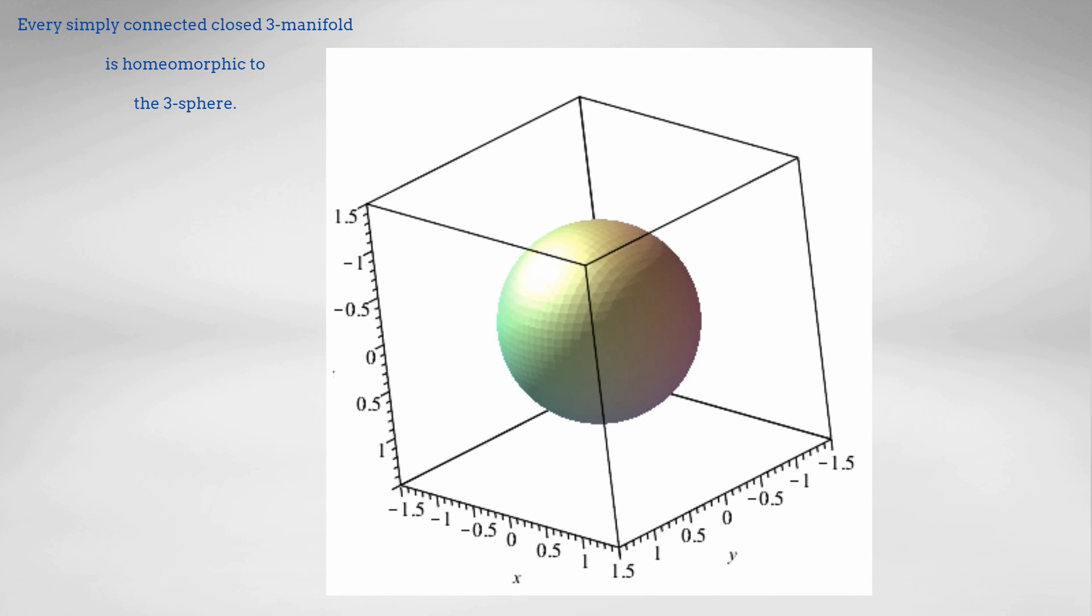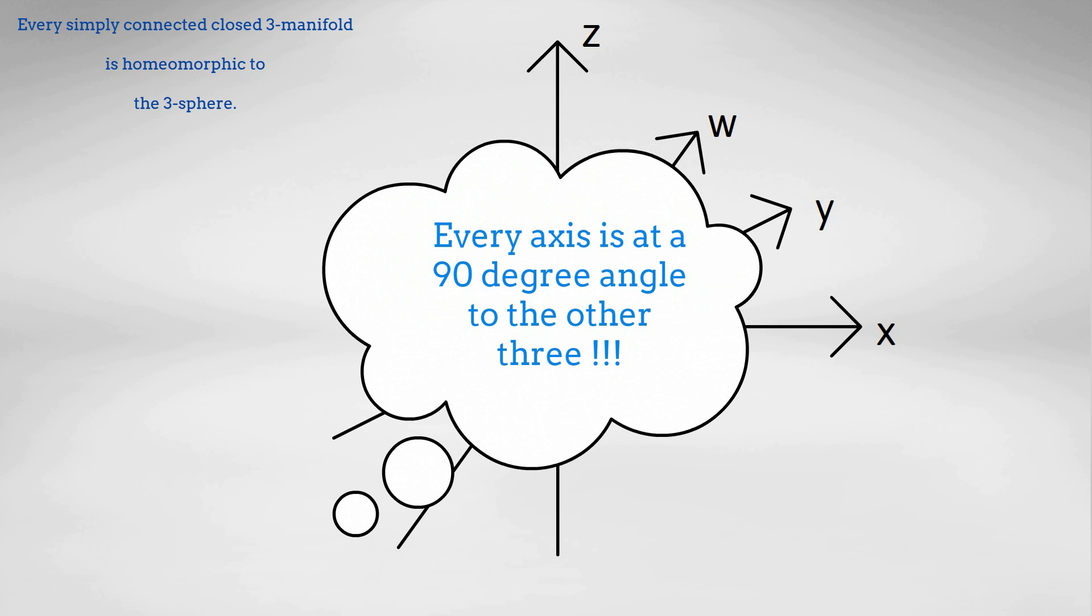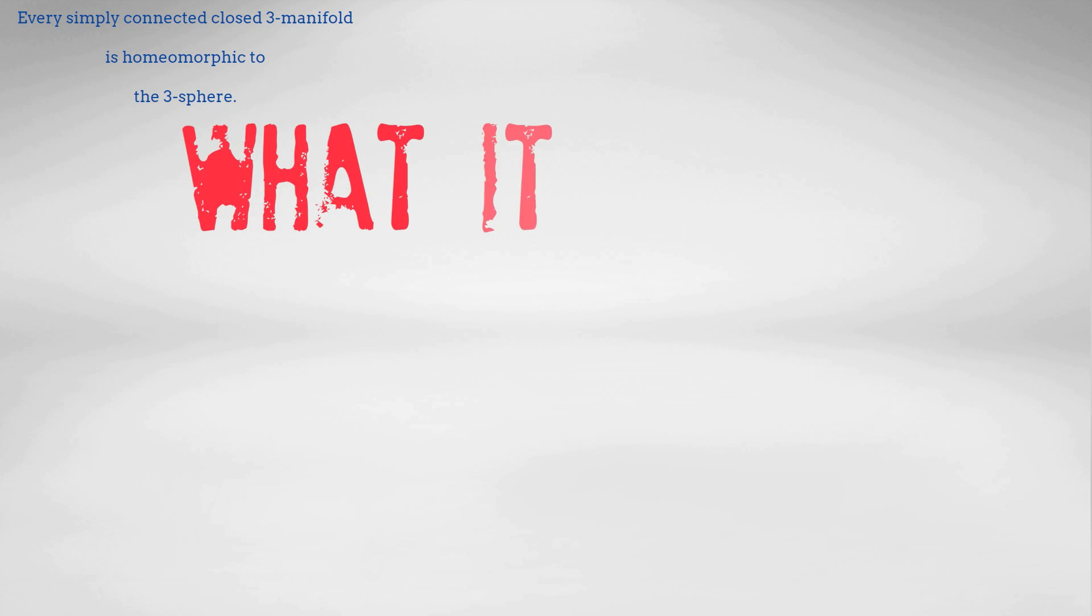And so that then naturally takes us to this three sphere. The three sphere has a three dimensional surface. It sits in four dimensional space and every point is the same distance from the center of the four sphere. Unfortunately my poor little three dimensional brain can't work out how to display the three sphere. So that's all I want to say about the three sphere.